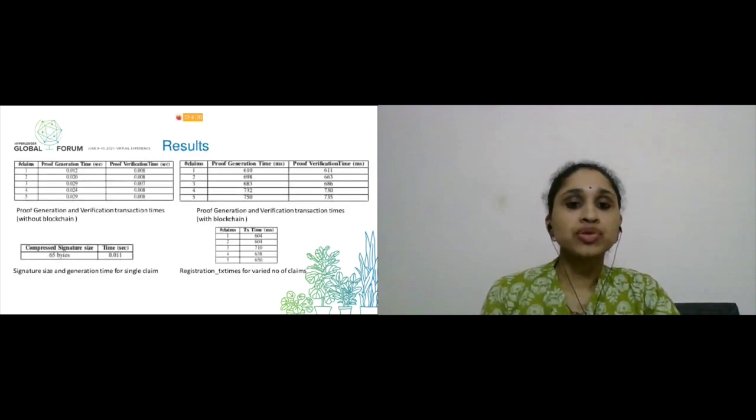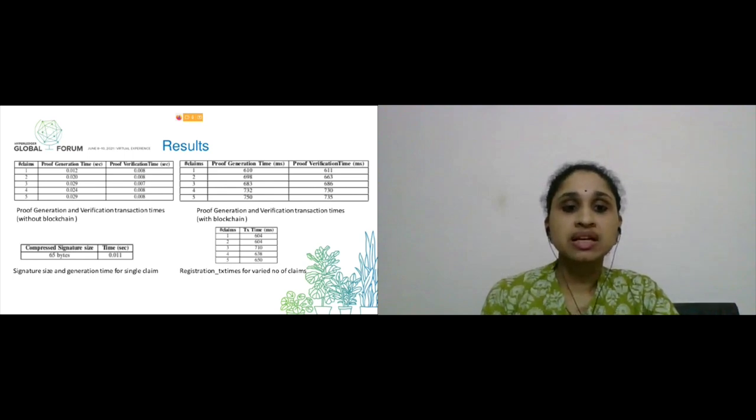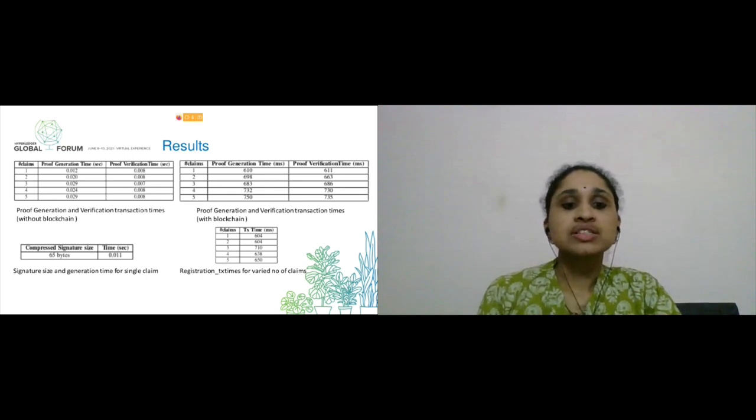Here we have some of our results. Without blockchain, the proof generation is on average taking about 0.025 seconds. Verification is taking about 0.007 seconds. With the blockchain, the timings are on average about 0.7 seconds. The signature size which is compressed is around 65 bytes. Time for generating signature for a single claim is 0.000011 seconds. Registration transaction is also taking around 0.7 seconds.